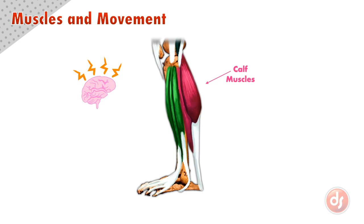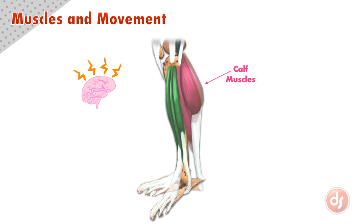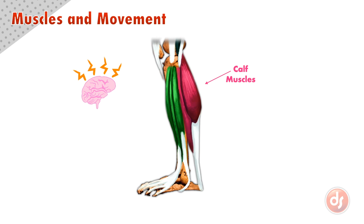Watch here and make note of how the calf muscle shortens as it contracts. This is essentially a mechanical movement where a muscle pulls on a bone at a joint or pivot point.